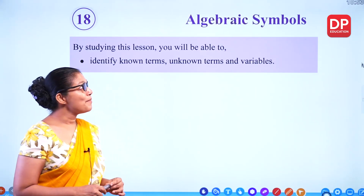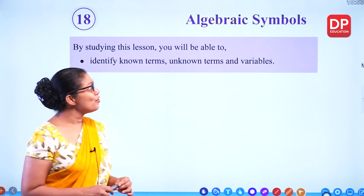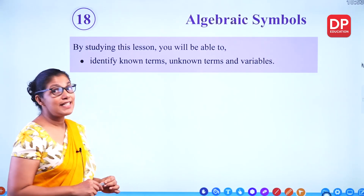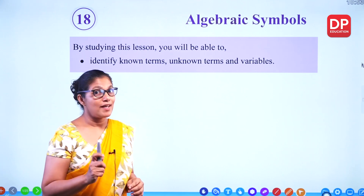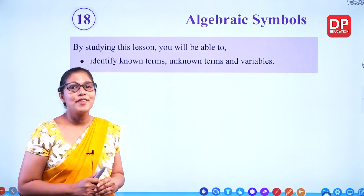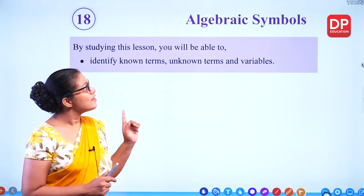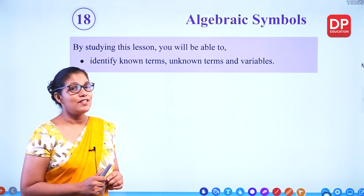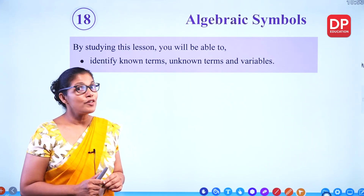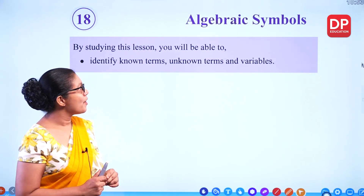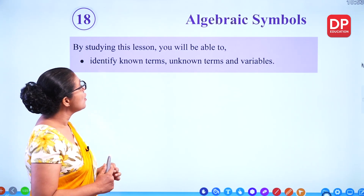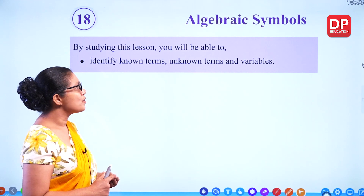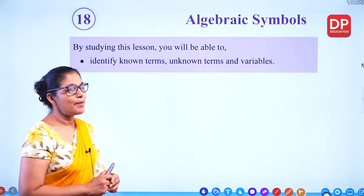Hello children. Today I am here to teach you chapter 18 in your textbook — that's algebraic symbols. This is the first lesson in your third term work. Algebra is really important to know, and in this lesson we are identifying known terms, unknown terms, and what are variables.